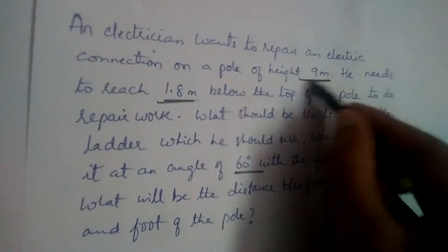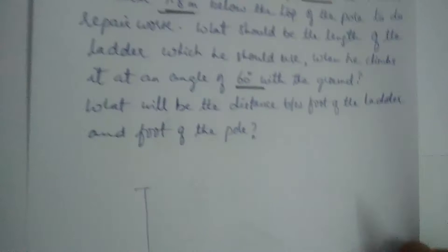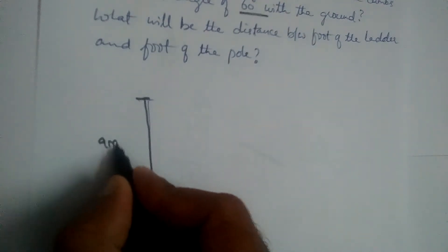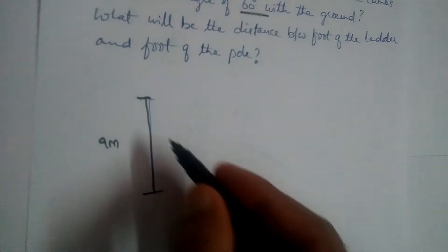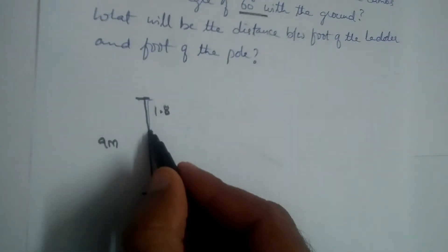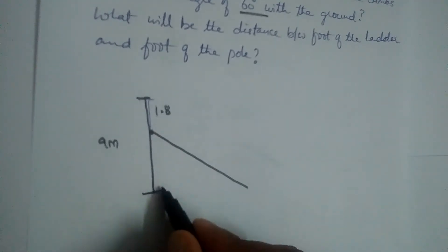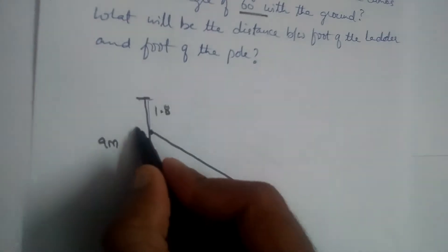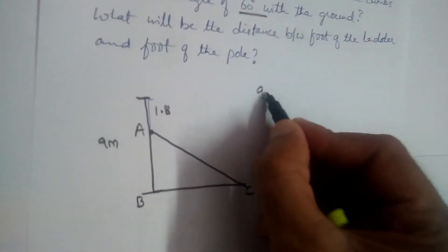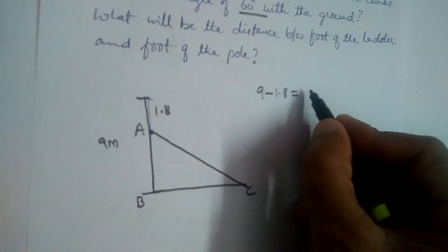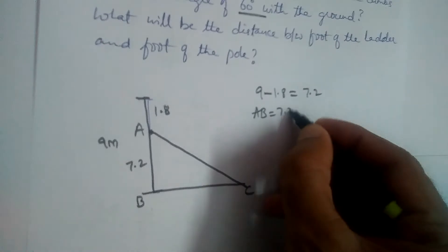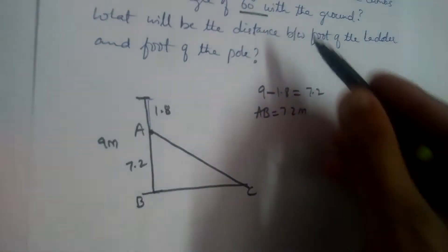So the height of the pole is 9 meters. Let this be the pole. The electrician should stand here — he needs to reach 1.8 meters below the top of the pole to do the repair work. If this is A, this is B, and this is C, then AB = 9 minus 1.8 = 7.2 meters.